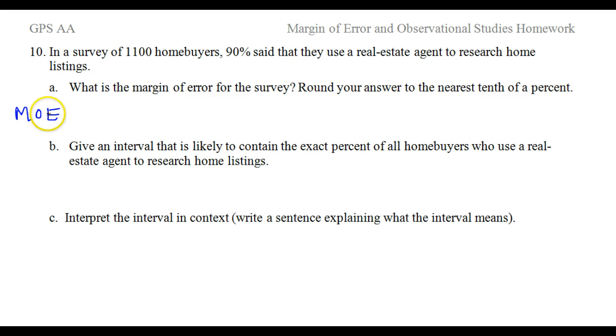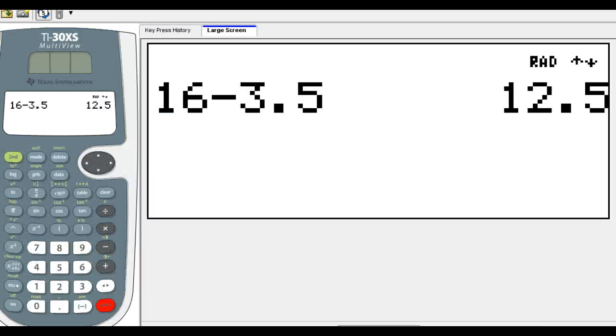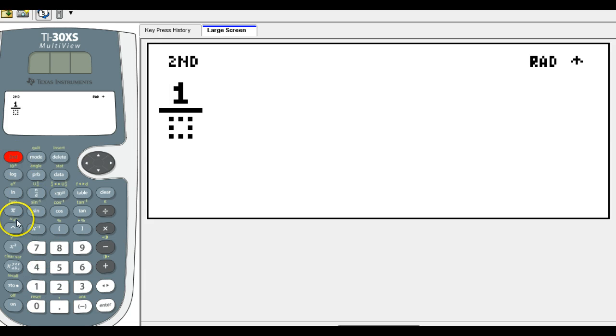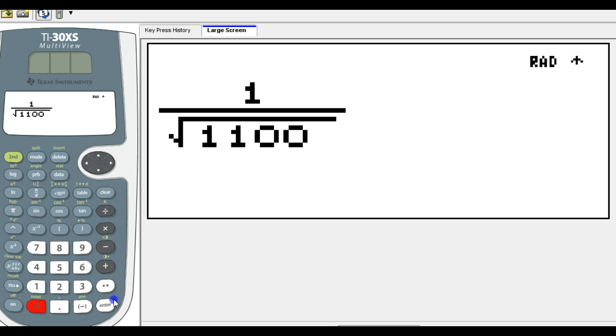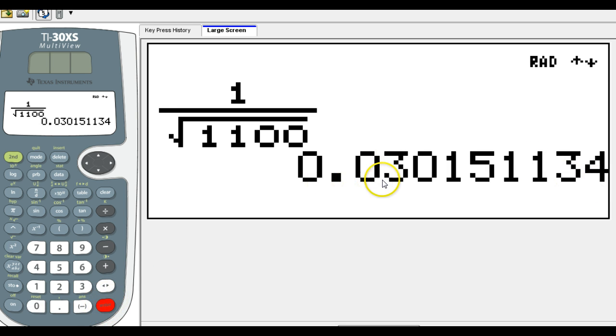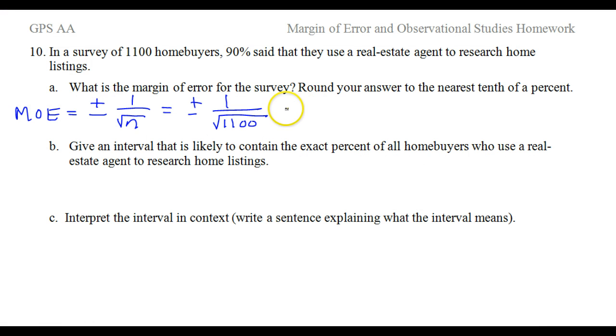the margin of error is given by plus or minus 1 over the square root of the sample size. So that's going to be plus or minus 1 over the square root of 1,100. So 1 over the square root of 1,100 is this. Moving the decimal point twice gives me 3.0%. We will not round up, so 3.0%.